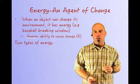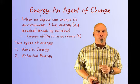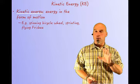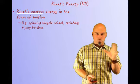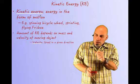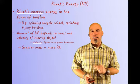There are two types of energy. Some of this is going to be a review, and some of it's going to be new. We have kinetic energy and we have potential energy. Kinetic energy is the energy in the form of motion — a spinning bicycle wheel, sprinting, or a flying frisbee. The amount of kinetic energy depends on the mass and velocity of the moving object. The greater the mass, the more kinetic energy it has.